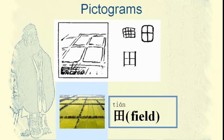This one means field. Just look at these squares on the ground — people plant things in all these squares. This means field, and the pronunciation is 田 (Tián), Tián.